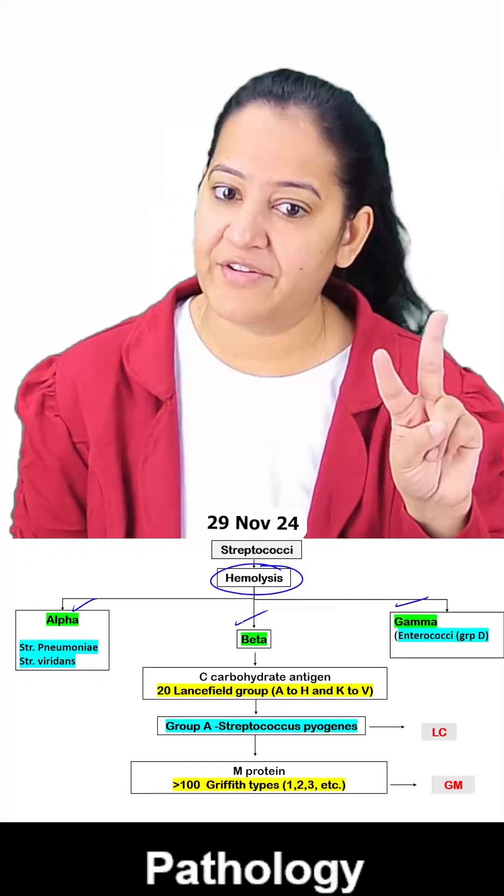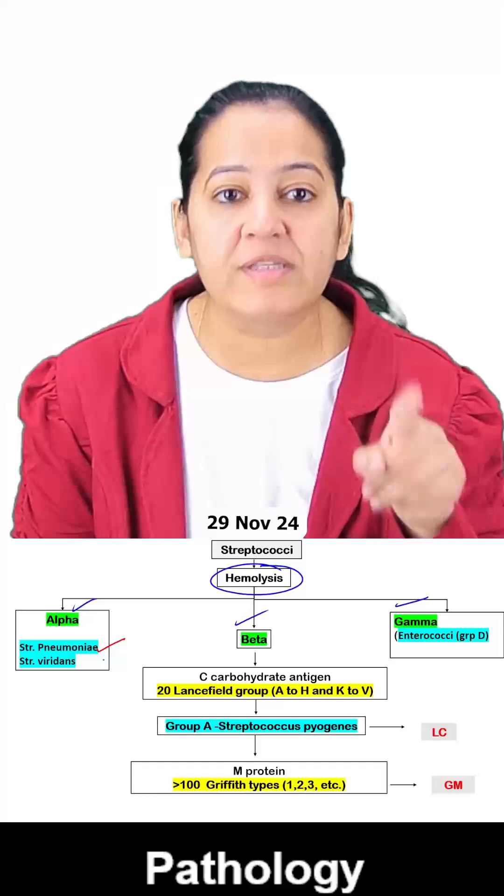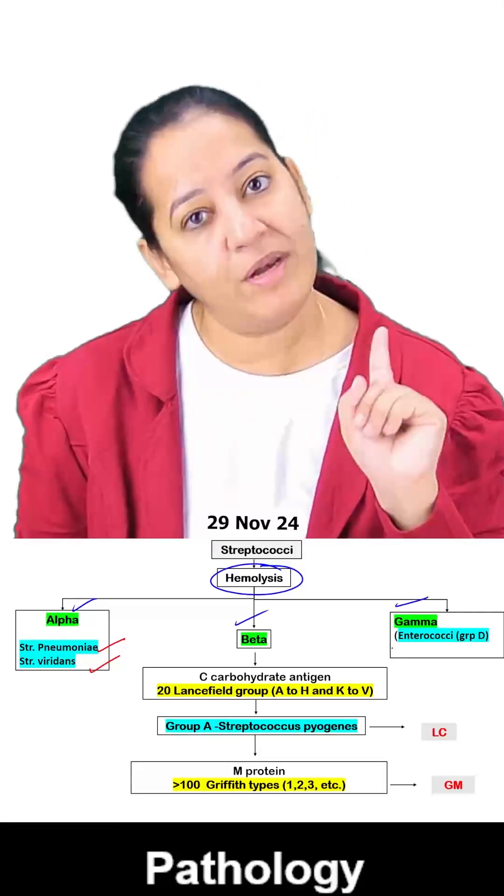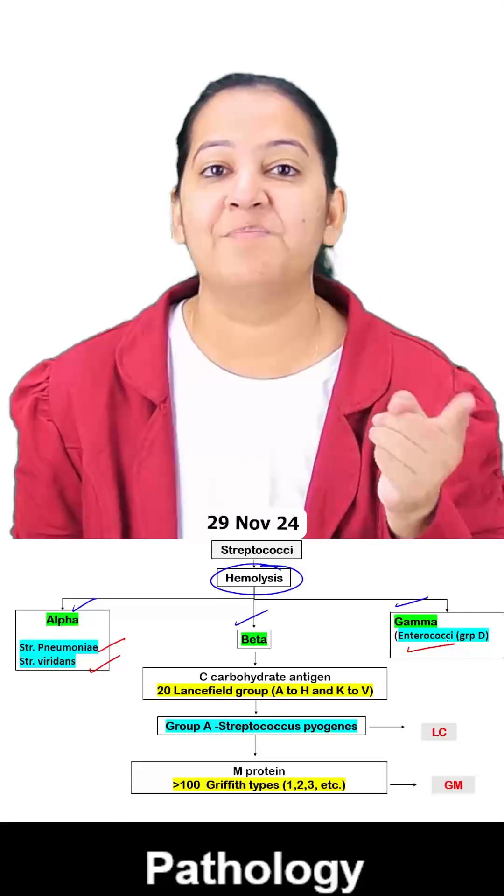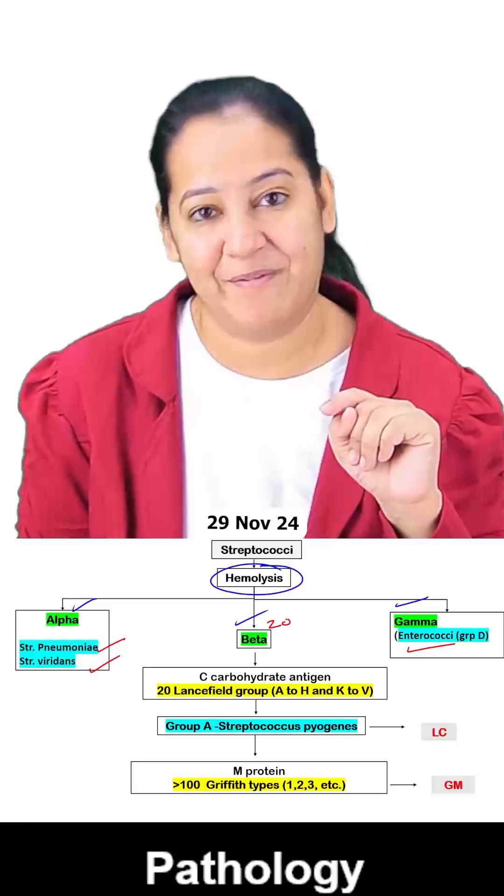In alpha hemolytic, only two bacteria are there. You have to learn their names: Streptococcus pneumoniae and viridans. In gamma, only one bacteria is there, that is Enterococcus. But in beta, there are 20 types of Streptococcus.